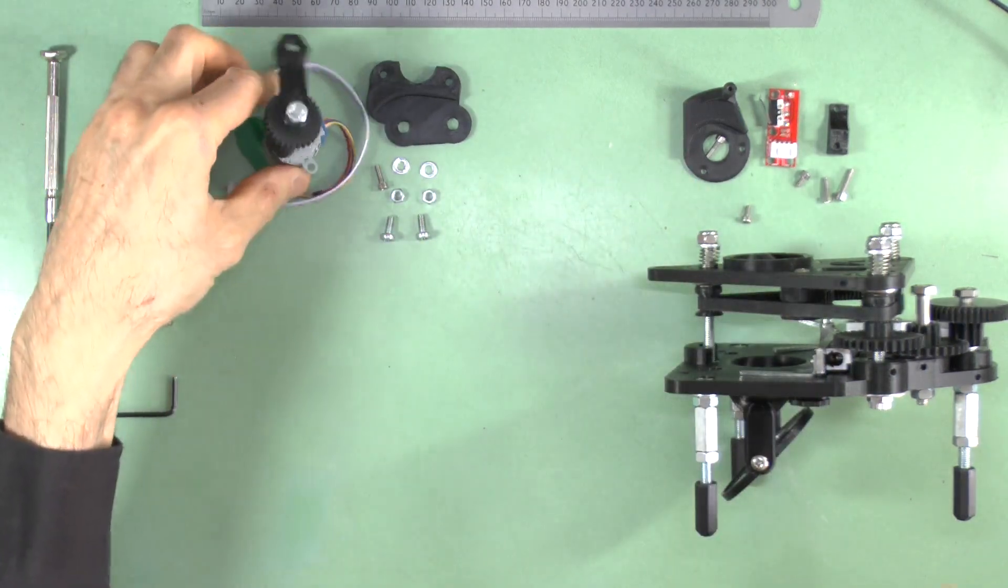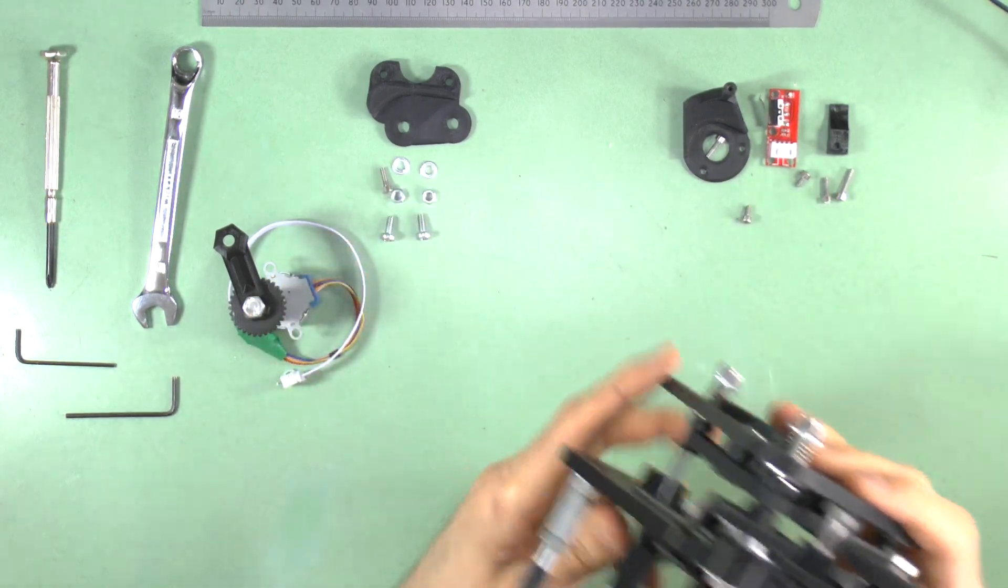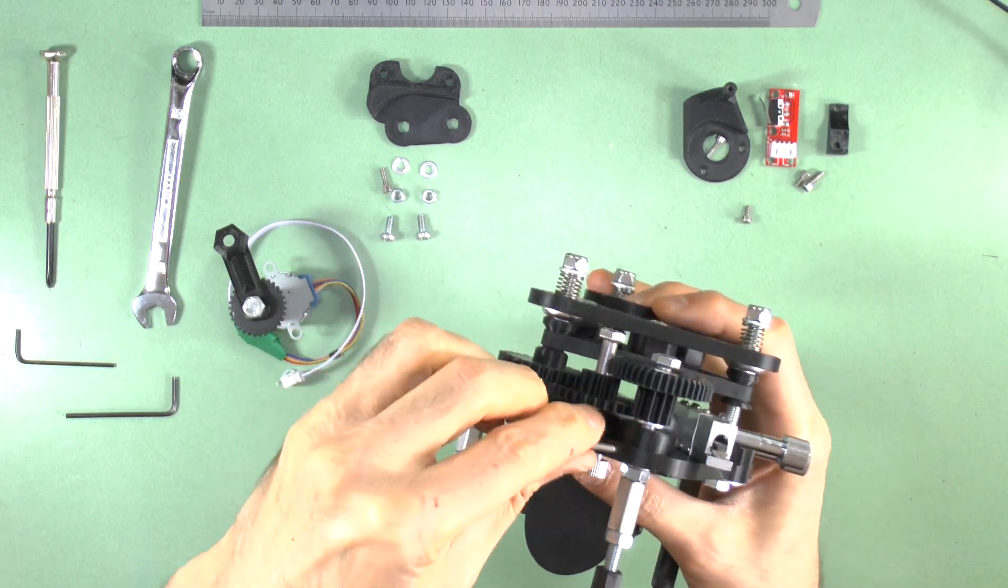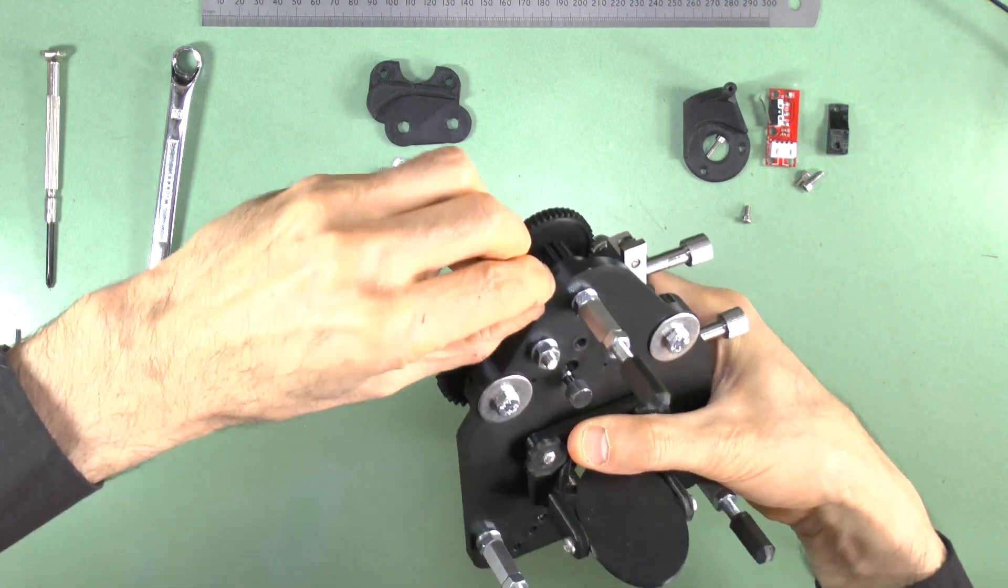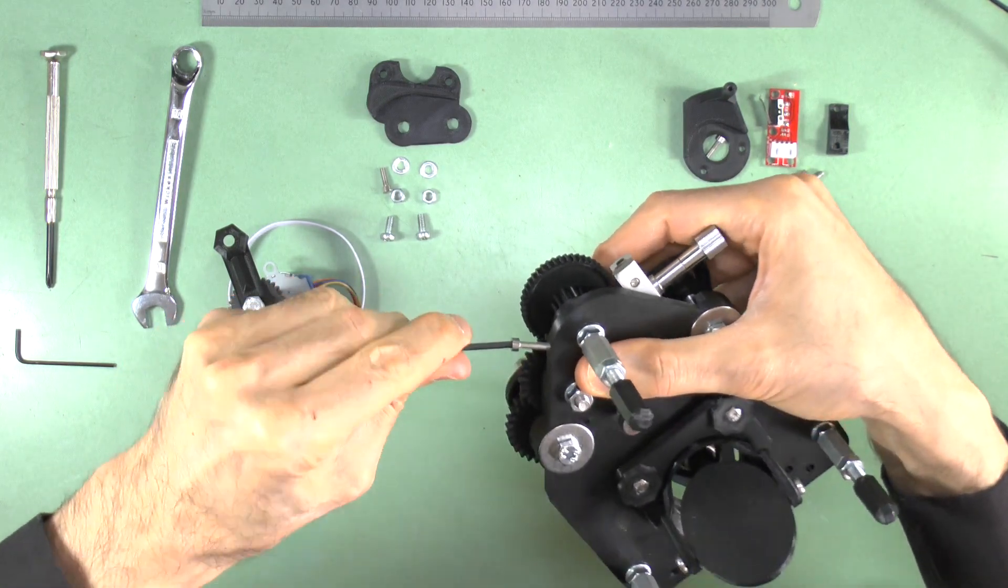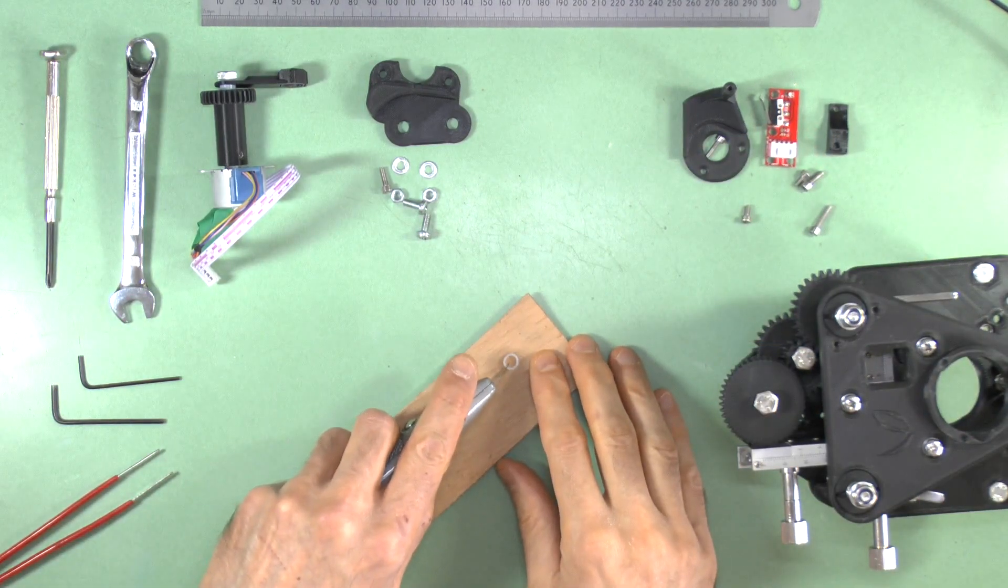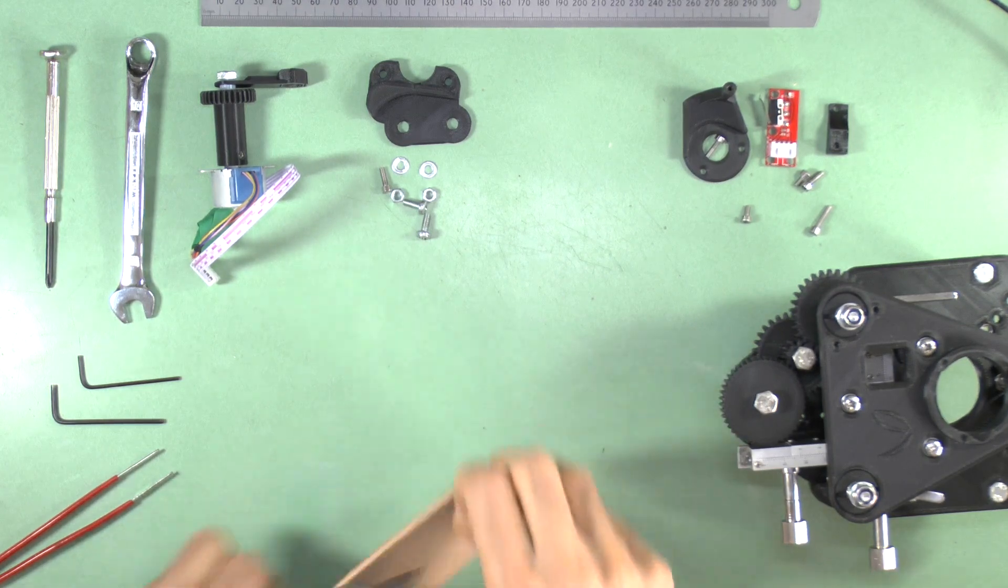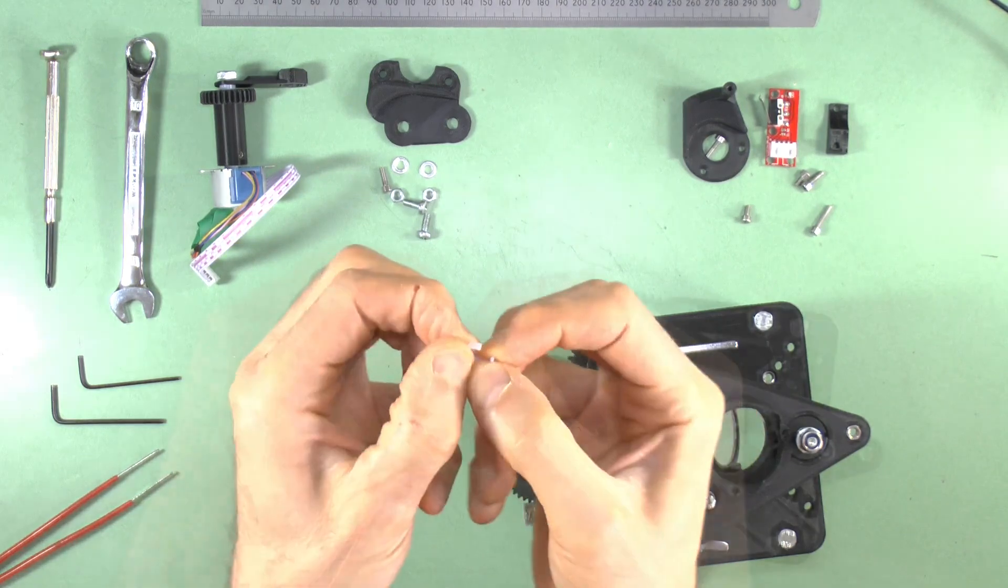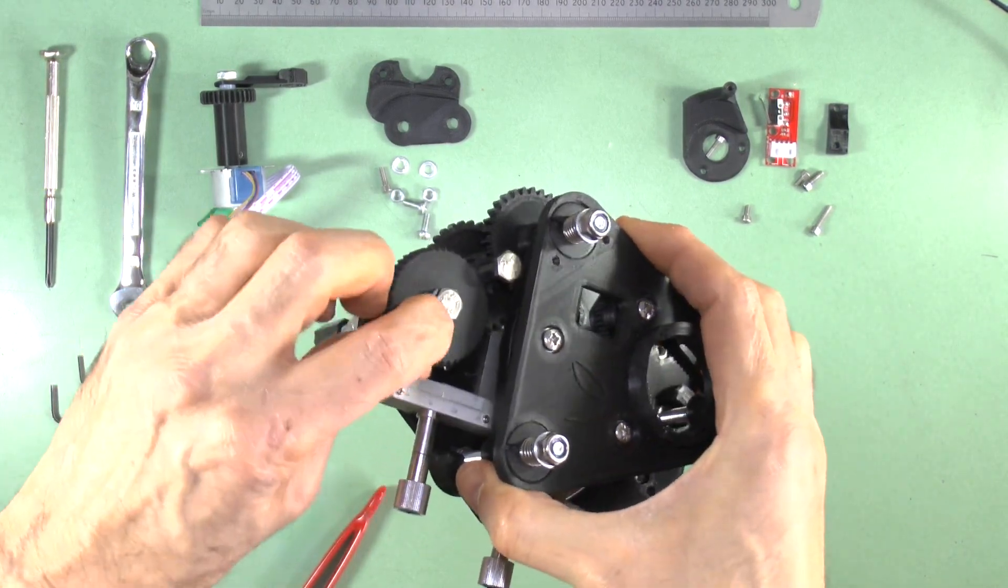The next step is to pre-thread all these holes in the stage and focus platform with an M3 bolt to make it easier to fit all the components on. You only need to thread the holes part way. You can complete the threading when you fit the actual parts. Split the 2 mm long PTFE ferrule and fit this as a collar between the hex head of the fine focus gear bolt and the fine focus gear itself. This is important to prevent the gear from rising upwards and getting jammed when the motor is in operation. Jamming can cause the motor to stall resulting in inaccurate Z height positioning and motor coil overheating.